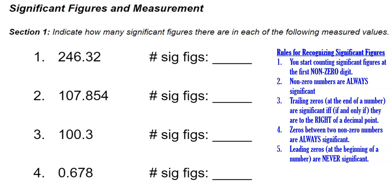In this video we are going to look at significant figures and measurements, starting with some significant figures practice. Section 1 says to indicate how many significant figures there are in each of the following measured values. We're using our rules for recognizing significant figures, which are added here for reference. Feel free to refer to your notes while practicing, because it does take some time to get used to these rules, but with enough practice it will be easy.